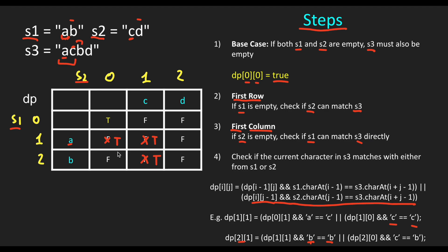Now let's go to the last character, 'D'. We compare D with the second character of each string — D is not equal to B, but D equals D. For S3 to be an interleaving string, DP[2][1] must be true. It is true, so we update this value to true and return the result.